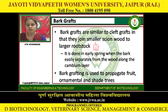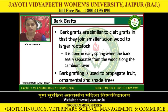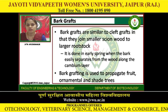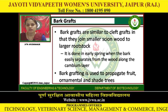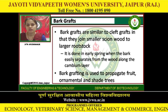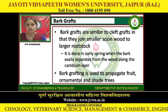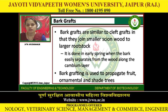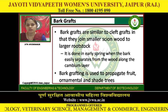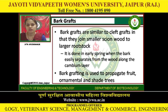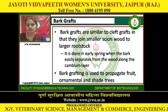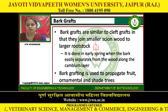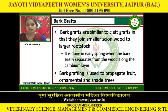Bark grafts are similar to cleft grafts in that they join a smaller scion wood to a larger rootstock. It is done in early spring when the bark easily separates from the wood along the cambium layer. Bark grafting is used to propagate fruit, ornamental, and shade trees.